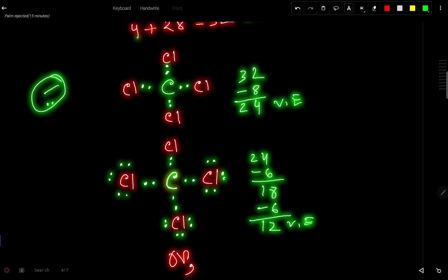Let us satisfy the octet for this third chlorine atom. So we have six valence electrons left, so these six valence electrons will come for the fourth chlorine atom. Now look, this carbon has two, four, six, eight.